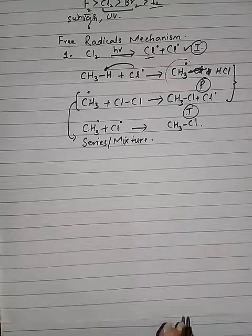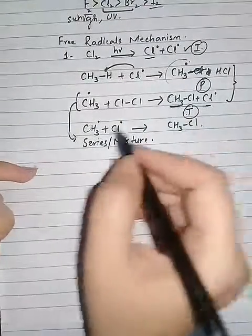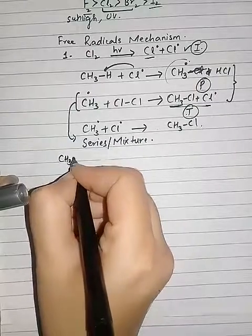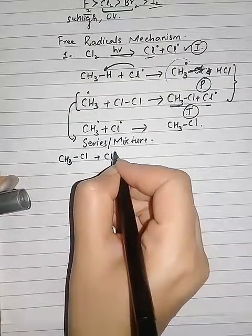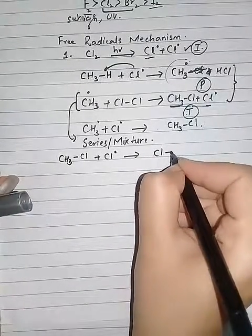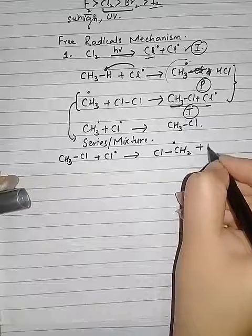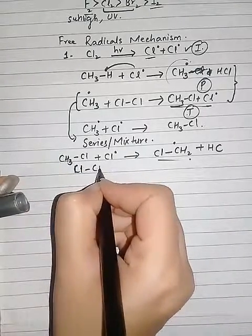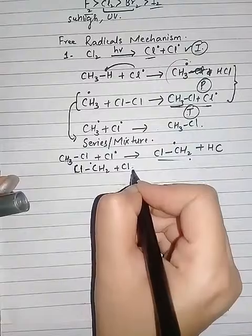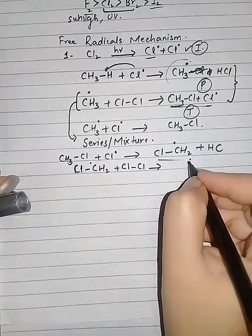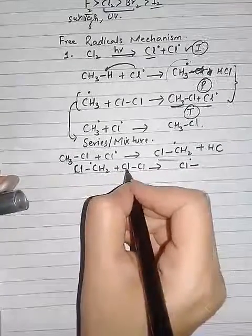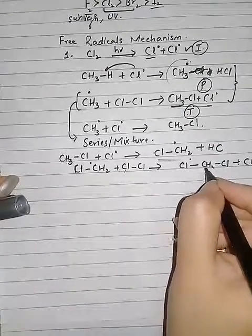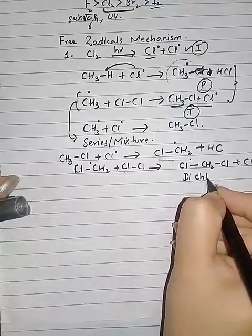First of all, when this second step is repeated, it will form dichloromethane. It will take another chlorine and chlorine radical, forming CH2Cl2. This is dichloromethane. Now this chlorine radical will again attack this dichloromethane.